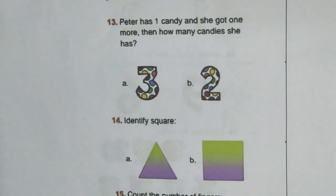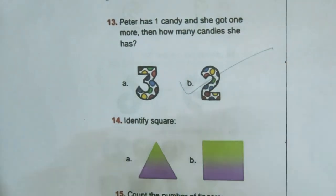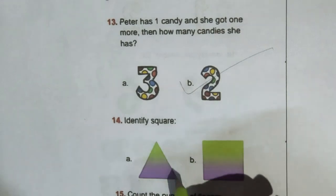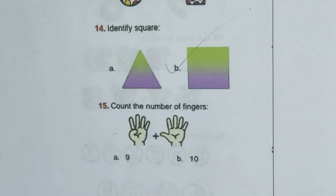Question 13: Peter has one candy and got one more — how many candies does she have? She already had one and got one more, which means she has two candies finally, hence option B, 2, is the right answer. Question 14: Identify the square. Option A is a triangle, whereas option B is a square, hence option B is the right answer.